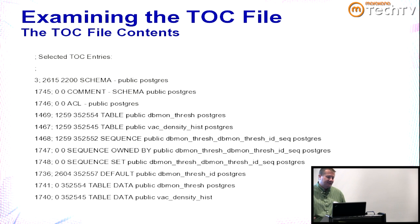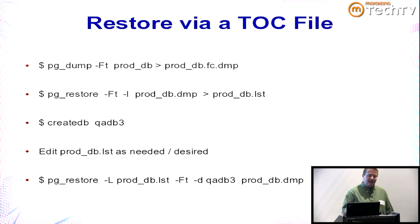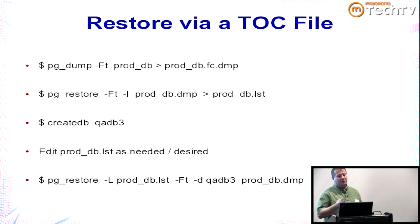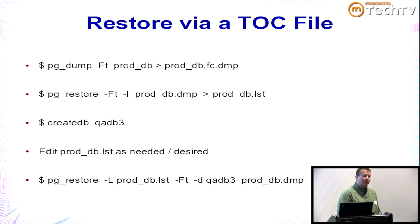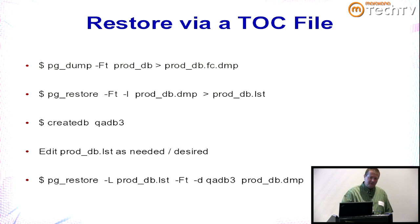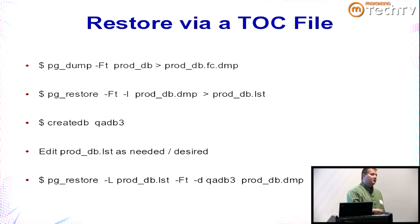Here are examples using the table of contents: first do a pg_dump to a tar-formatted file, then run pg_restore with -l on that dump file redirected to a list file, create the target database, edit the list file to select what to restore, then run pg_restore with -L specifying the list file along with the rest of the normal parameters.